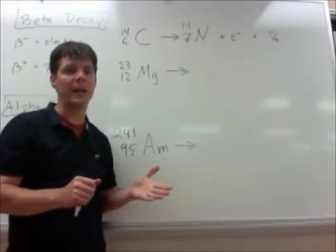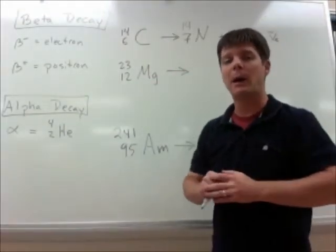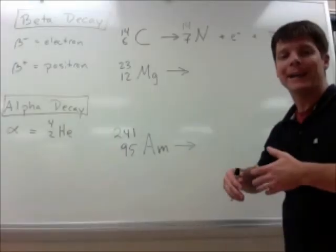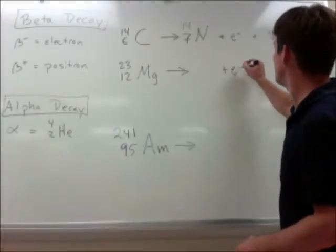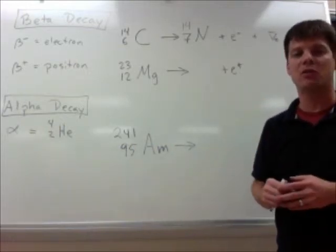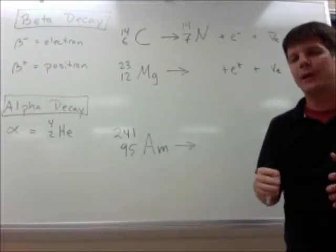So that is an example of beta minus decay. Our next example, we're going to look at beta positive decay or positron emission. In this one, it's going to look similar, but there are some key differences. First, we're going to produce an E plus particle. This is a positron particle, and we're going to produce an electron neutrino.